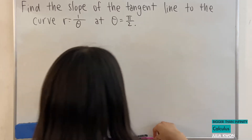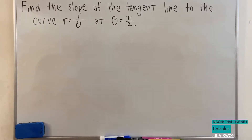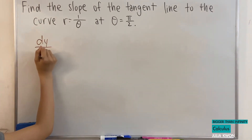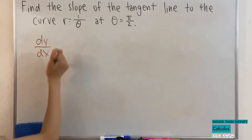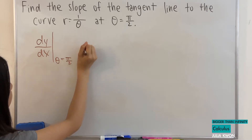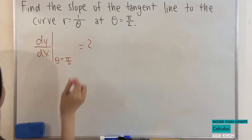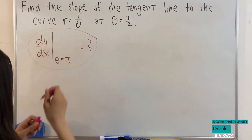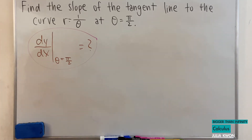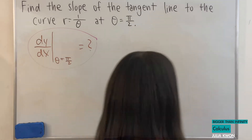So if I rewrite this problem, what it's basically asking is dy over dx — this is the slope — at theta is equal to pi over 2. You may think: how do we find dy over dx when we don't have anything in terms of x?